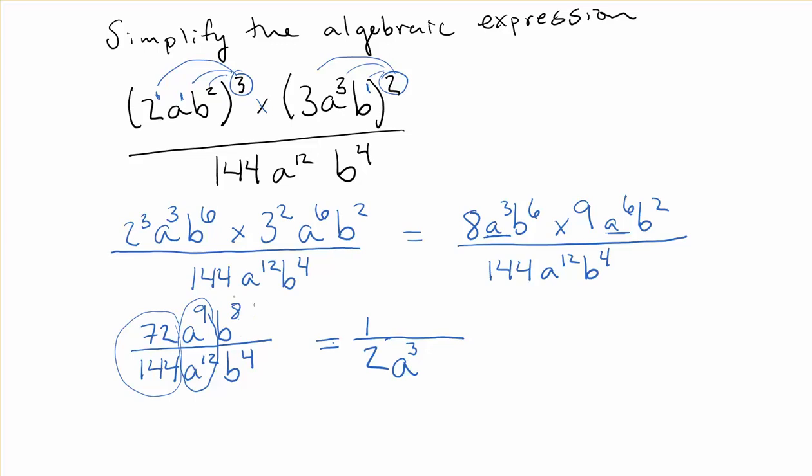And b to the 8 on top and b to the power of 4 on the bottom. So I know I have a difference between those of 4. There's more on top. That's where the leftovers will go. So I've got 1 b to the power of 4, 2 a to the power of 3. And we can just write that as b to the power of 4 over 2 a to the power of 3.